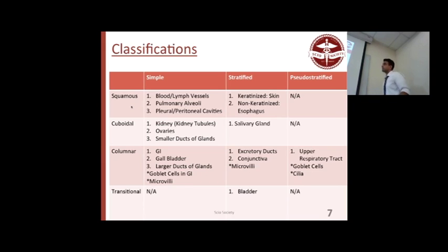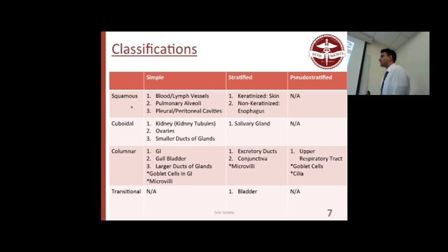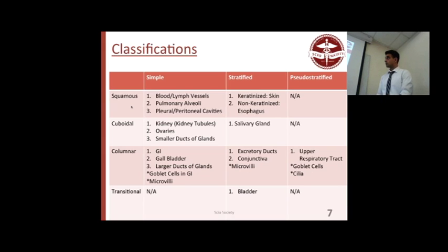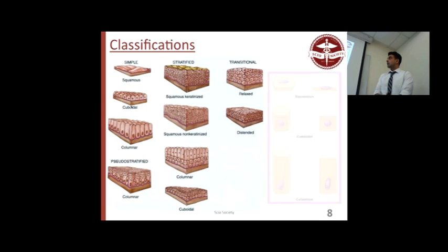A way to memorize: cuboidal — just think of round things: ovary, kidney — they're rounder. For columnar, use 'GGG' — GI, gallbladder, and glass. Know that microvilli is in the columnar series. Pseudostratified is focused on cilia. Know keratinized and non-keratinized — we've covered those.